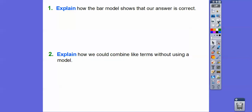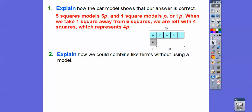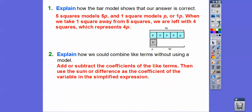The bar model shows our answer is correct: 5 squares modeled the 5p, and 1 square modeled the 1p. When we take off that 1 square from the 5 squares, we're left with 4 squares representing 4p. Now, let's explain how we can combine like terms without using a model — this is the easy part that will lead us into the next lessons.